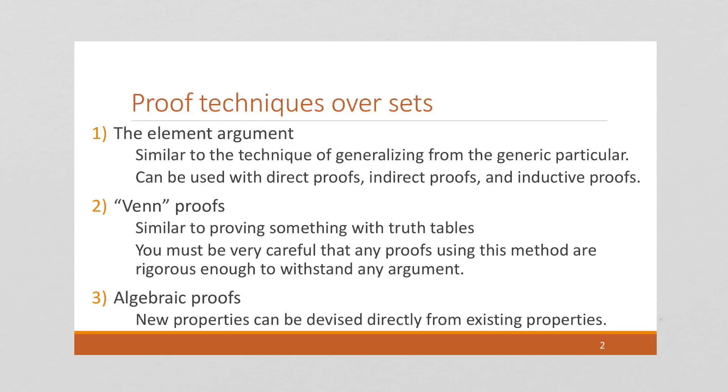So again, we've talked now about the element argument. We've done some examples of Venn proofs. Now we're going to look at algebraic proofs, which can be devised directly from existing properties.